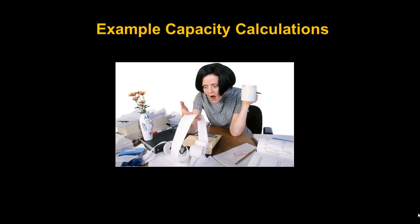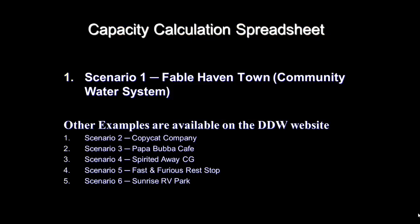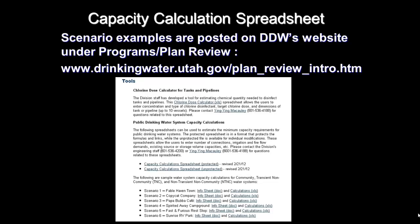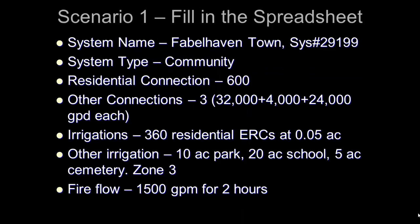We are now going to jump into an example capacity calculation using the Excel spreadsheet. We will cover a scenario for the fictitious Fable Haven Town, a community water system. Other example calculations for the different types of water systems are provided separately and can be found on the Division's website under Programs and Plan Review. The following info will be needed for data input on the spreadsheet and is typically determined during the sanitary survey. The system name is Fable Haven Town, system number 29,199. This is a community water system with 600 residential connections and three other connections.